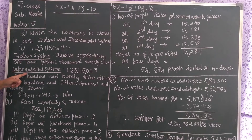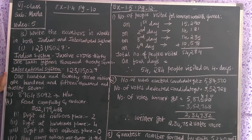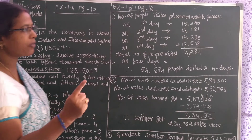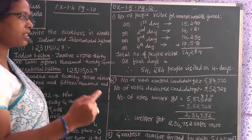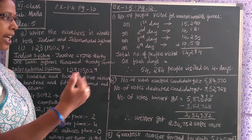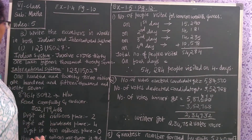Next, in international system of numeration, you should put the commas from the right side after every three digits. You know, in international system of numeration, after every three digits, you should put the commas from the right side.